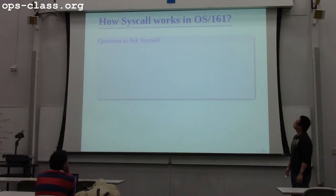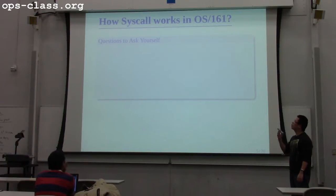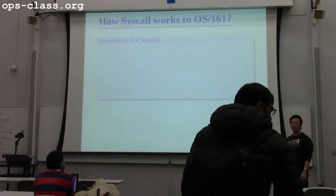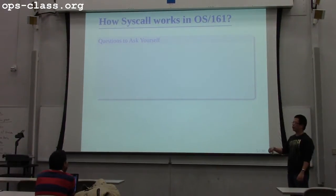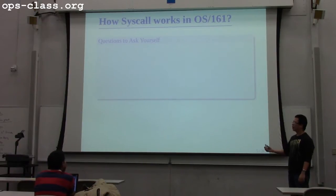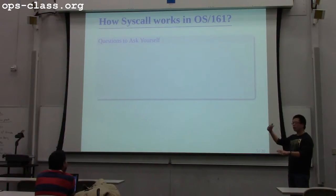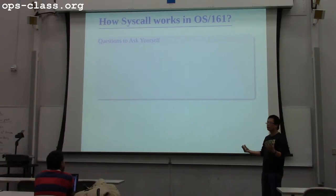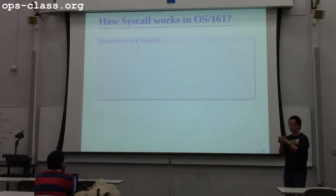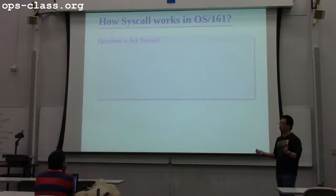When you design the file syscall — or general syscall — you need to have an idea of how the syscall works more generally, whether it's a file syscall like open or write, or a process syscall like fork or exec. Understanding how the syscall gets called gives you a big picture of what happens, so you don't get lost when you're working on a very small piece of the big picture.